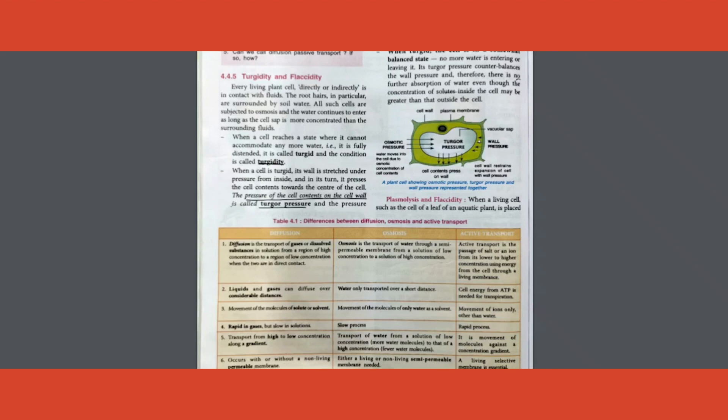The cell, if in a hypotonic solution, will be fully distended, fully filled with water, and that condition is called turgidity. So this turgidity is basically you have all the cell contents trying to push against the wall. It's the same way - the cell is fully full, it cannot take in any more water, and that state is called turgidity.